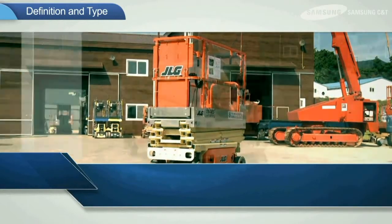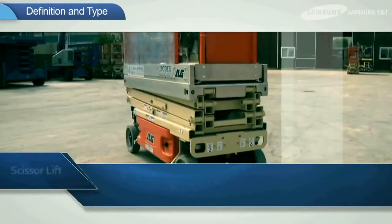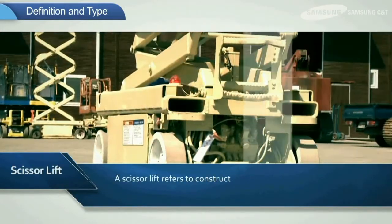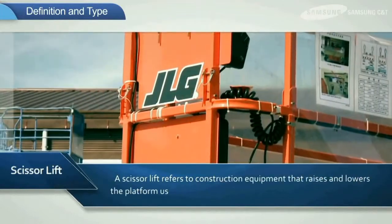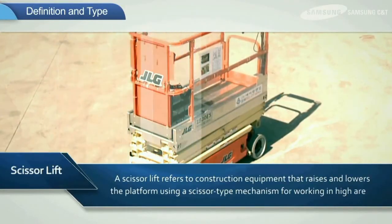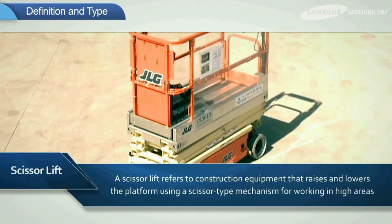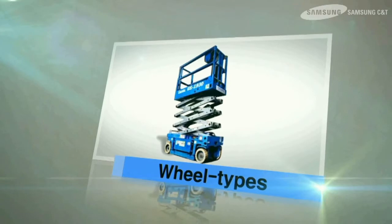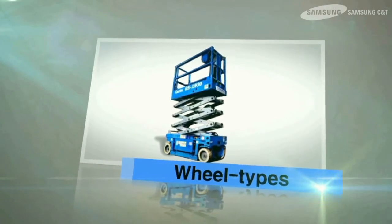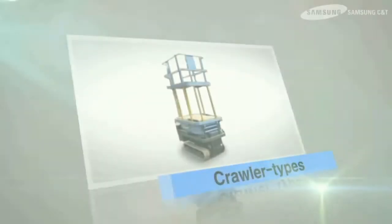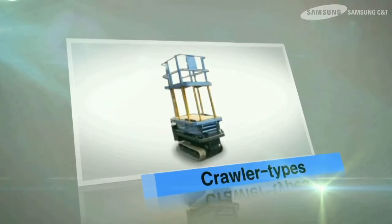Let's take a look at the definition of scissor lift and different types. A scissor lift refers to construction equipment that raises and lowers the platform using a scissor type mechanism for working in high areas. Scissor lifts are categorized into wheel types or crawler types, depending on the driving mechanism.